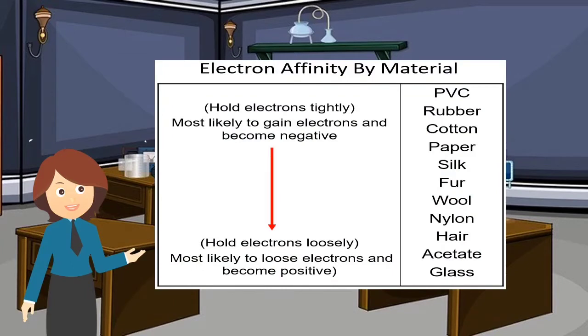So here is a chart showing the electron affinity of materials. As you can see in the picture, PVC has a higher electron affinity, whereas glass has a lower electron affinity. Compared to PVC, fur has a lesser electron affinity. That's why the electrons of fur leave to PVC while rubbing.